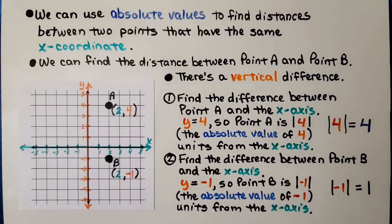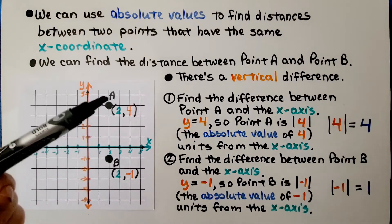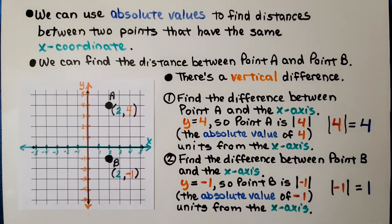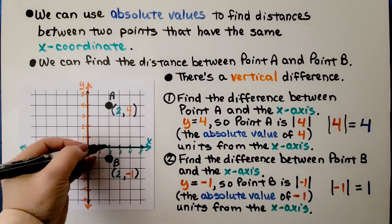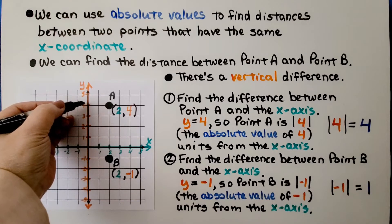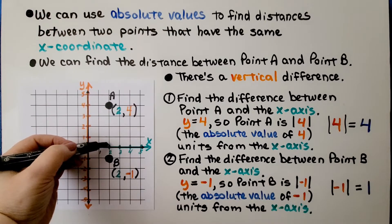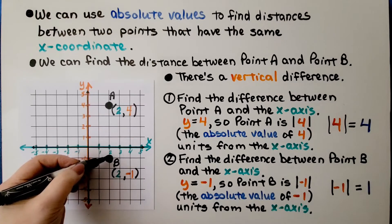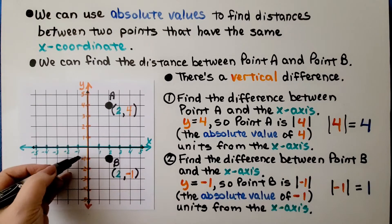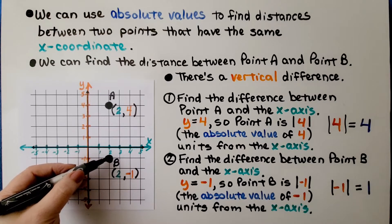We can use absolute values to find distances between two points that have the same x-coordinate. We can find the distance between point A and point B — there's a vertical difference. We find the difference between point A and the x-axis. Point A is at y equals four, so point A is the absolute value of four units from the x-axis.